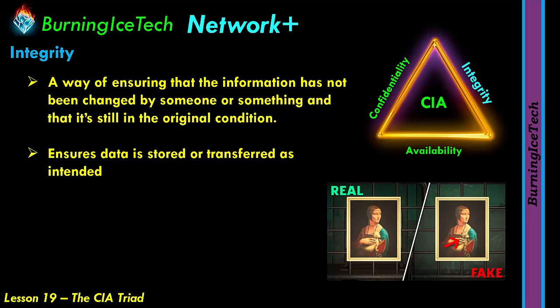To ensure integrity, one method is hashing — a form of encryption. You can use a key on your side and I use a key on my side to encrypt and decrypt. Without the keys it won't work. If someone intercepts the communication, they can't view or change it because it's encrypted. One key encrypts and the other key decrypts.